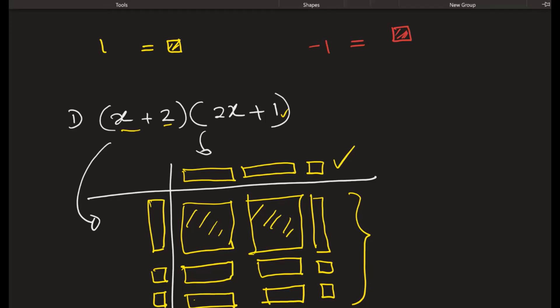Okay, so now we can move on. You see I have 2x squared, so we can write that. And then I have how many x's? I have 1, 2, 3, 4, 5 x's, and there's 2 units.